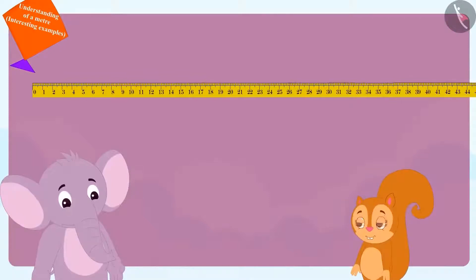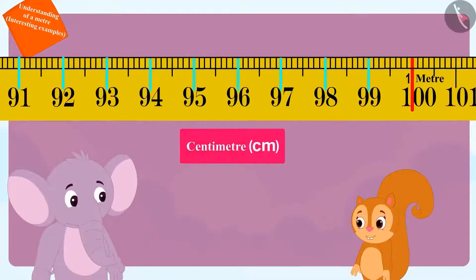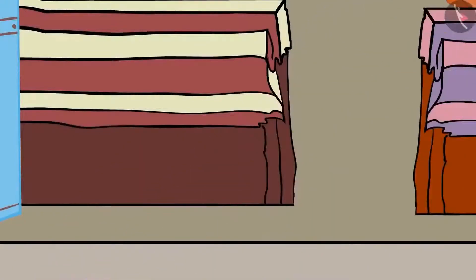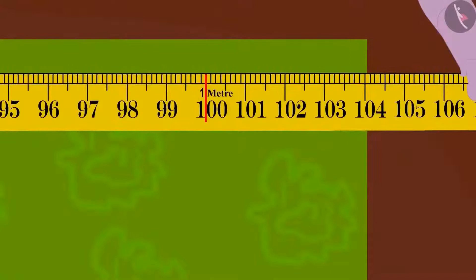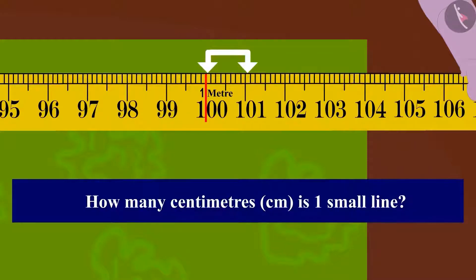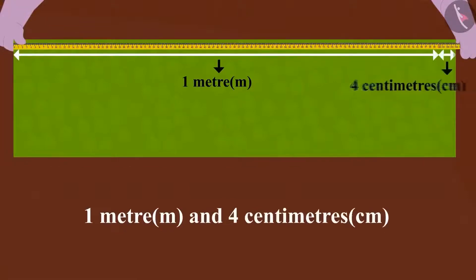Appu told Chanda: look at these measuring lines. These small vertical lines show the measurement of centimetres, and the long vertical lines show us the measurement in meters. Appu took a material from uncle and measured it using the measuring tape. Children, can you tell how long this material is? The length of the material is more than one meter. One small line equals one centimetre. So the length of this material is one metre and four centimetres.